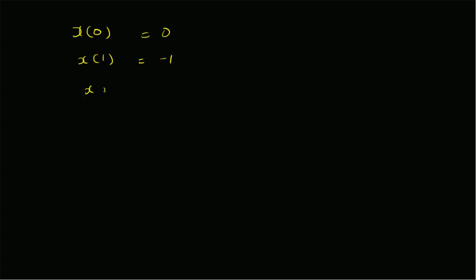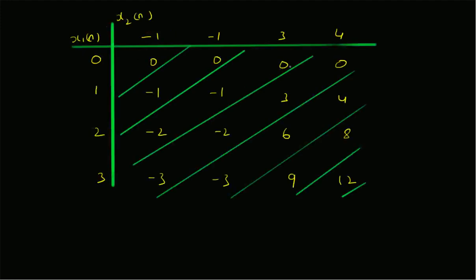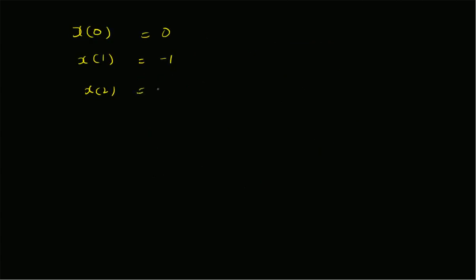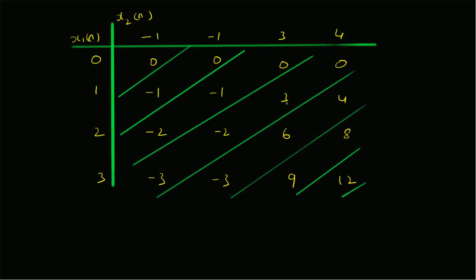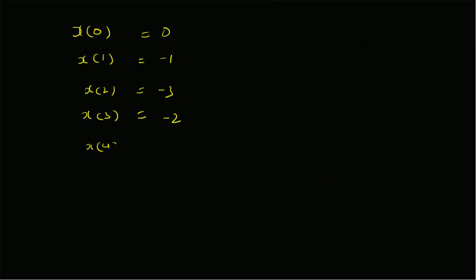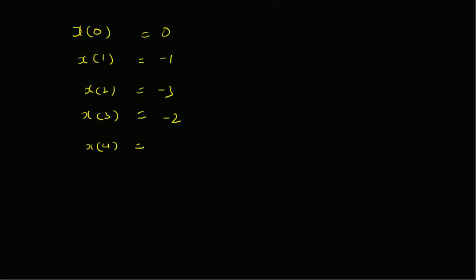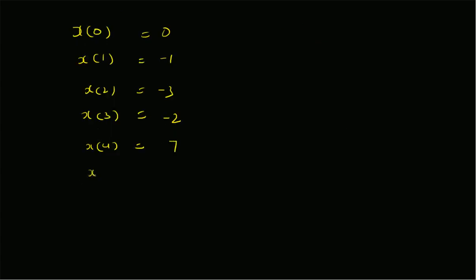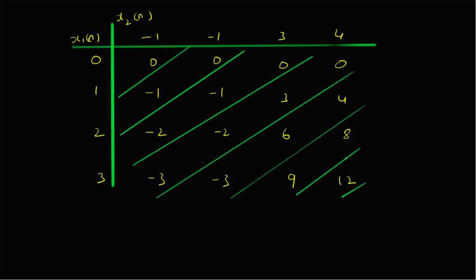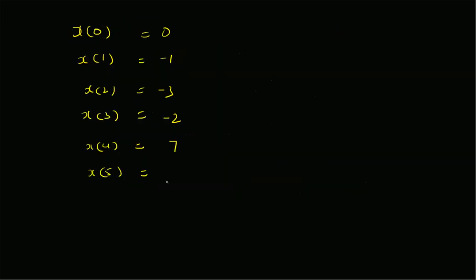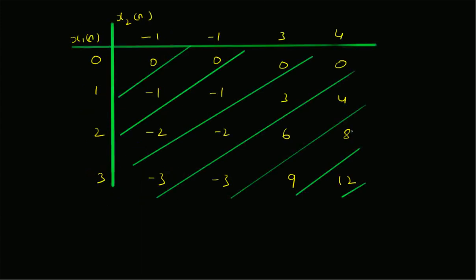Continuing: x(2) is the sum along the third diagonal — 0 + (-1) + (-2) = -3. Then x(3) is along the fourth diagonal: 4 + 6 + (-3) = 7. Then x(5) along the sixth diagonal: 8 + 9 = 17. And finally x(6), the last diagonal, is simply 12.